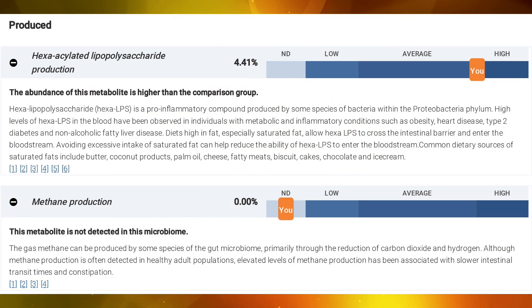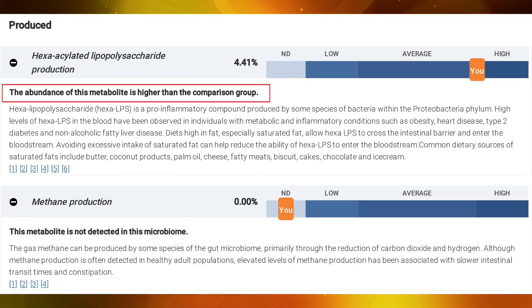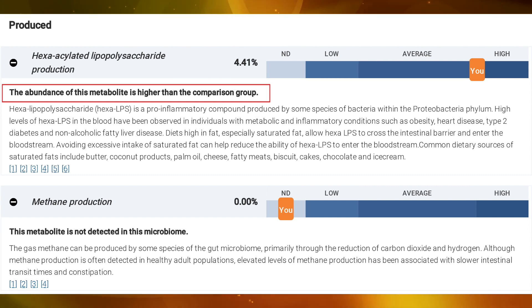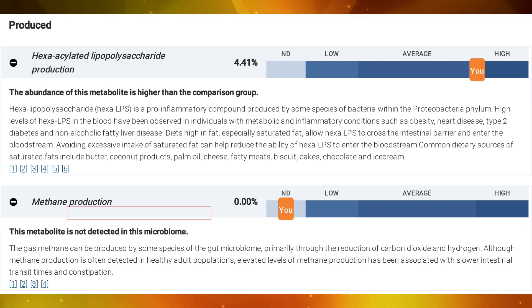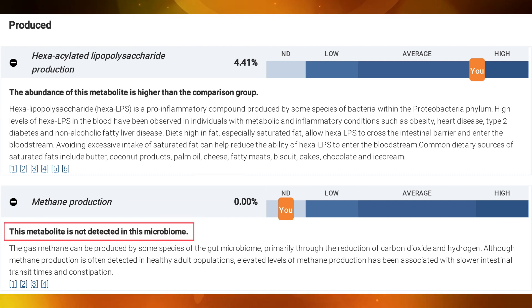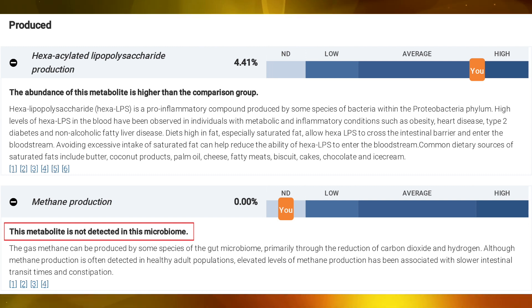Your gut bacteria can produce thousands of different substances called metabolites when they use different fuel sources for energy. These metabolites can interact with our immune, metabolic, and nervous systems to influence our health. Some of these metabolites promote good health while others promote poor health.